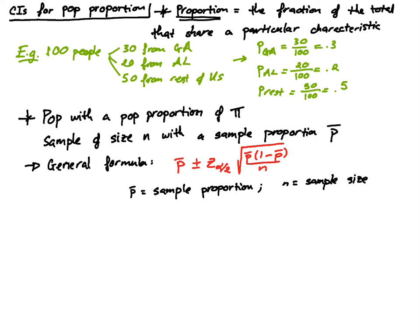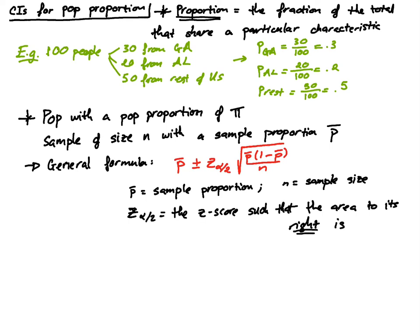And z sub α/2 — by now we know what this notation is. This is the z-score such that the area to the right of it is α/2. So for example, if we want to find the 90% confidence interval, then z sub α/2 is 1.645.